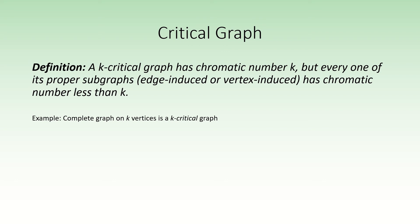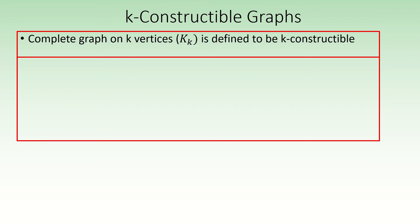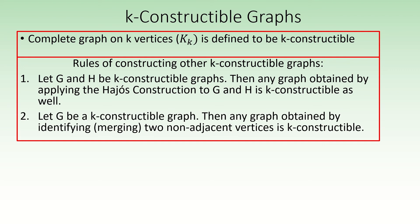Complete graphs on k vertices are one example of a k-critical graph. Next, we'll need the concept of a k-constructible graph. To begin, the complete graph on k vertices is defined to be k-constructible. Then we are given several rules for finding the other k-constructible graphs. The first is: if we have two k-constructible graphs g and h, not necessarily distinct, then the graphs formed by applying the Hayosh construction to g and h are also k-constructible. Also, if we have some k-constructible graph g, the graph formed by taking any two non-adjacent vertices in g and merging them into a single vertex is also a k-constructible graph.